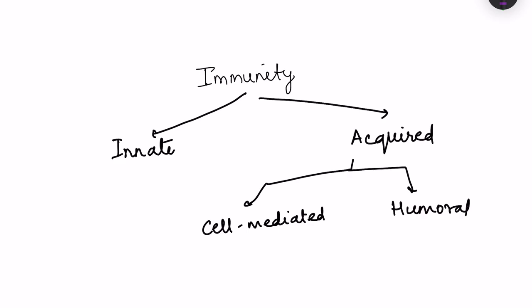Immunity is of two main types: innate immunity and acquired immunity. In acquired immunity we have cell-mediated immunity and humoral immunity. I have already made a detailed video on cell-mediated immunity with a link in the description. Today we will talk about humoral immunity.